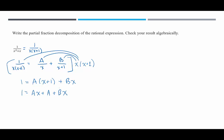Now we're ready to set up a system of equations. We're going to break this one equation into two separate equations. The first equation groups all terms containing the variable x. The left-hand side has no x-term, so we say zero x equals ax plus bx. Since all three terms contain x, we divide it out, leaving us with zero equals a plus b. This is our first equation.